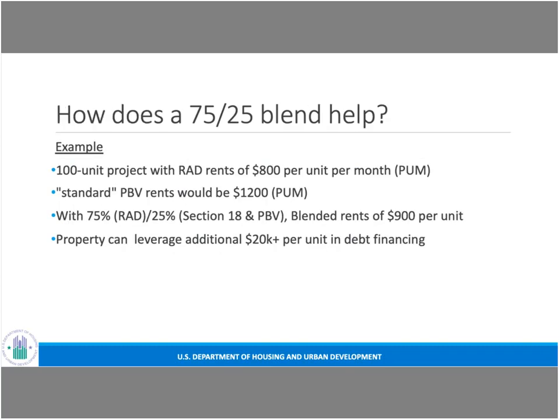How does this help? Very often, regular project-based voucher rents are higher than RAD rents. For example, take a 100-unit property with RAD rents of $800 per unit per month and standard PBV rents of $1,200. Blending 75 percent RAD and 25 percent Section 18 into a regular project-based voucher contract produces blended rents of $900 per unit. That additional revenue is enough to leverage an additional $20,000 per unit in debt financing alone, possibly more depending on interest rates.